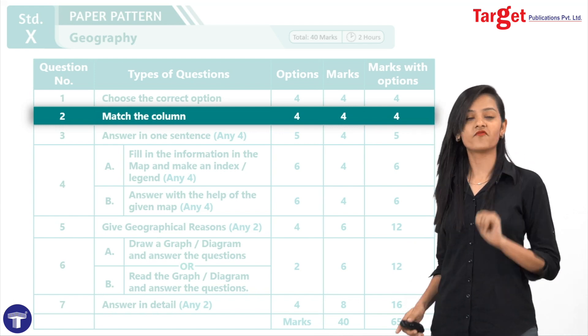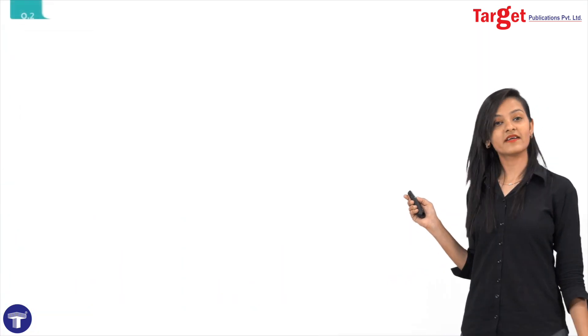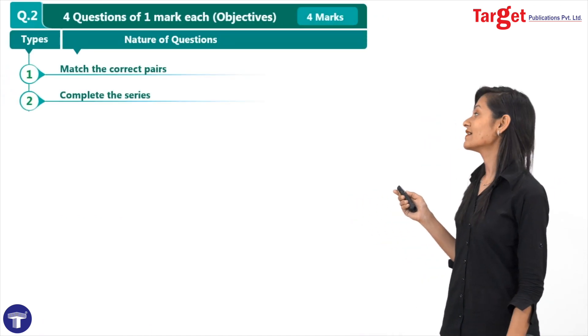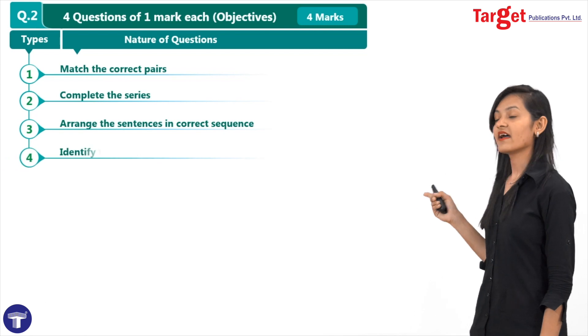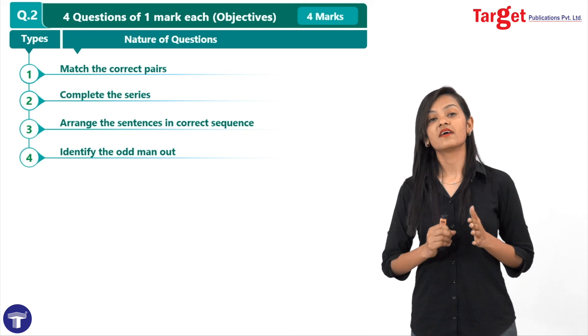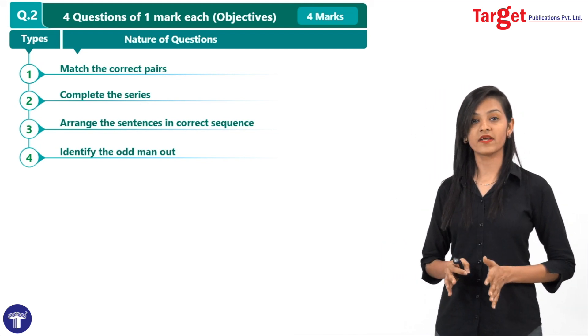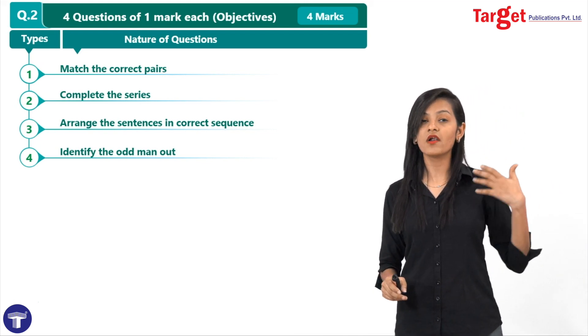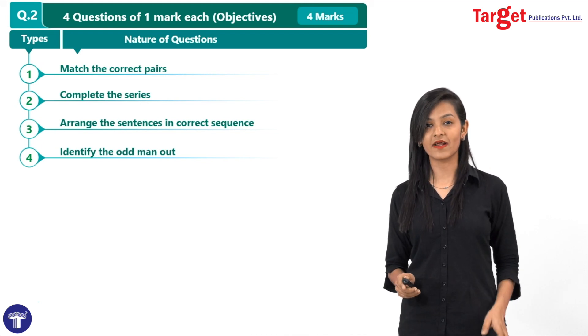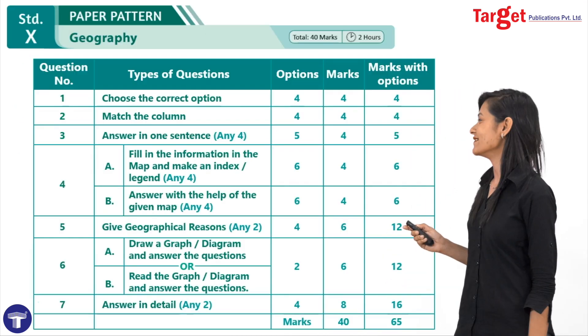The other type of questions that can be expected in question number two students, are complete the series, arrange the sentences in correct sequence and identify the odd one out. In Target notes, we have provided ample practice of all types of questions, which can be asked so that you don't miss out on the practice and go ahead.